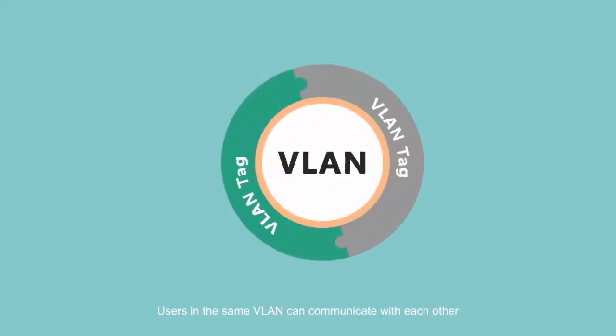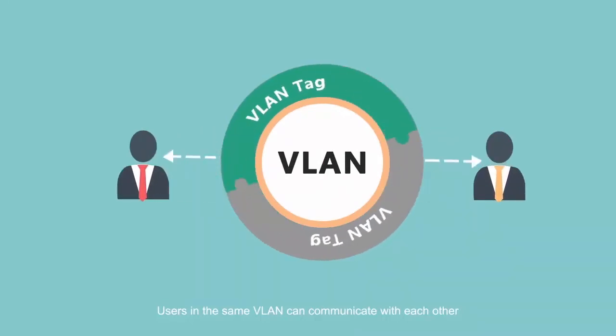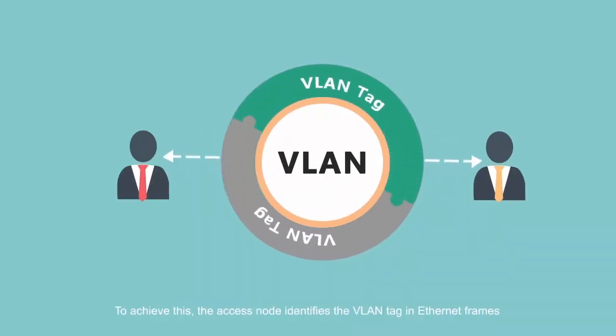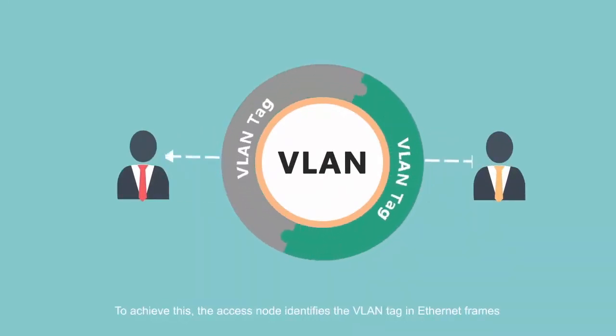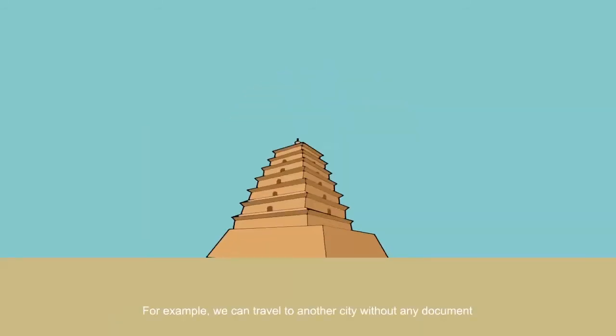Users in the same VLAN can communicate with each other. To achieve this, the access node identifies the VLAN tag in Ethernet frames.